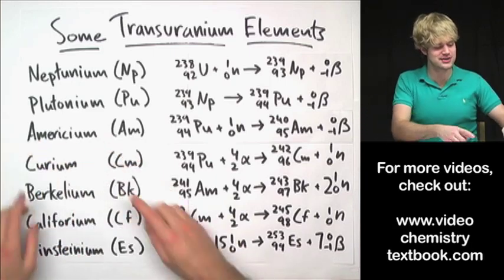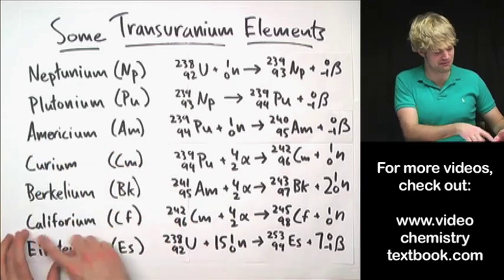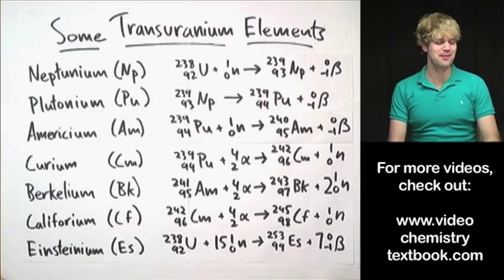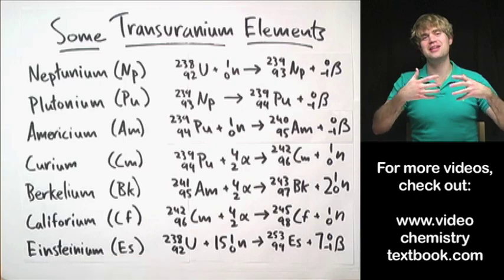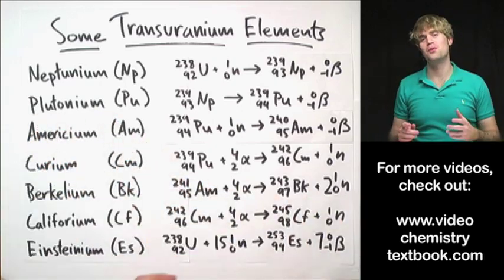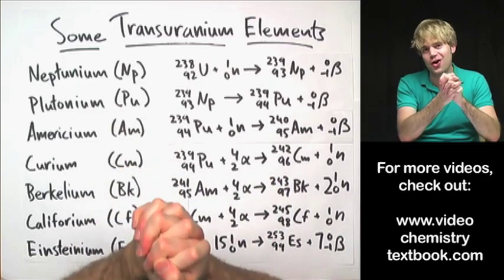Or sometimes they're named after the place where they were discovered, where they were made, like Americium. Berkelium was made in Berkeley and Californium. I bet you can guess where that was made. And then Neptunium is named after Neptune, and Plutonium named after what used to be the planet called Pluto.